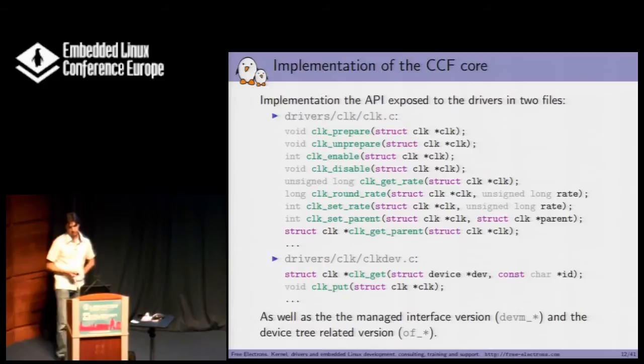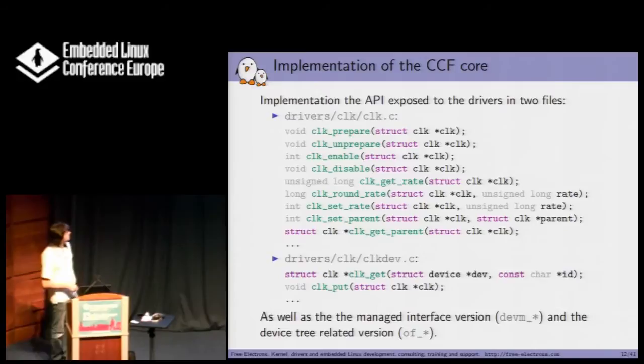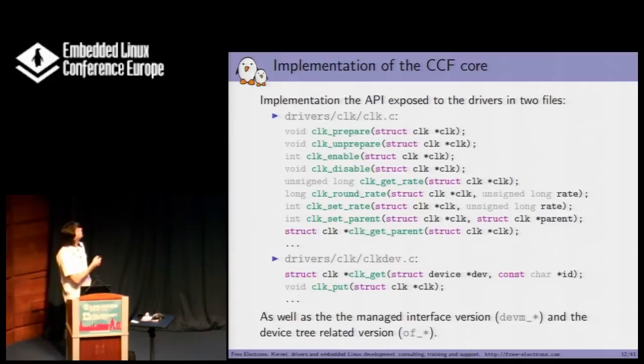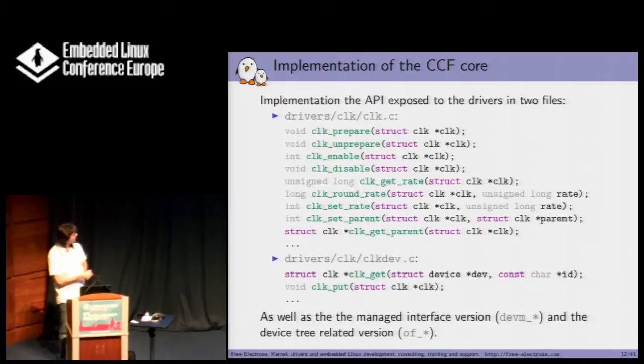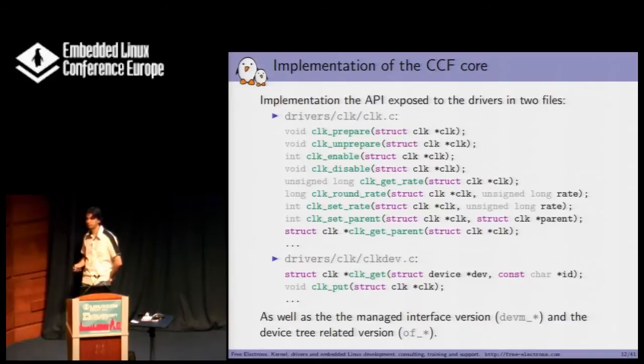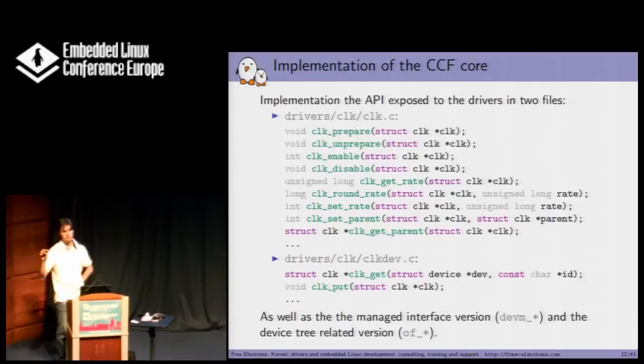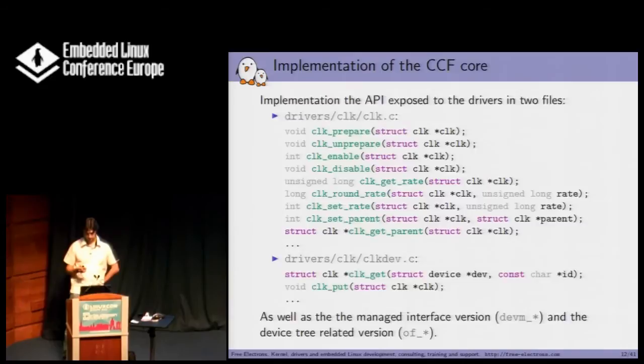The implementation is exposed to the driver in two files: clk.c and clkdev.c. You have most of the classical functions: prepare, enable, and so on — we will see those shortly. There is also the managed version using devm, and also all the related functions for device tree. For example, if you want to look for a specific clock by its name in the device tree, there are functions for that.